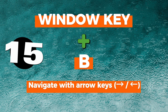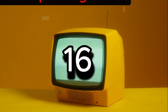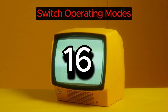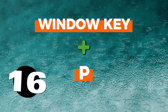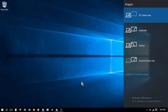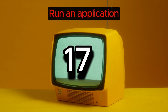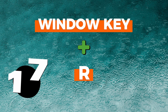Number fifteen: select the icon in the notification area. Access the notification area by pressing Windows key + B, then use the arrow keys to navigate around. Number sixteen: switch operating modes. For choosing the presentation display mode, press Windows key + P.